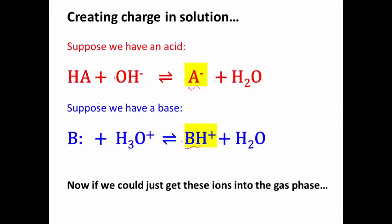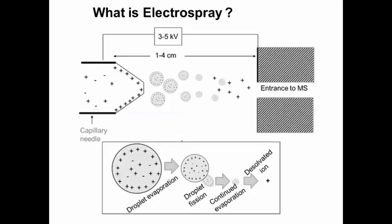This is assuming our ions were neutral to begin with. Depending on the pH of the solution, we can create positive or negative ions for our sample. They're still in solution and we have to find a way to remove that solvent and ultimately lead to gas phase ions, because that's what mass spectrometry demands. That's what electrospray really is about.